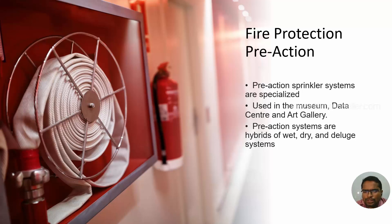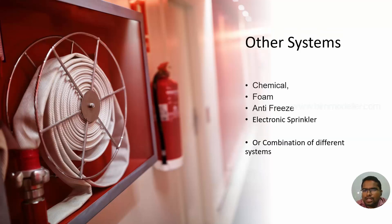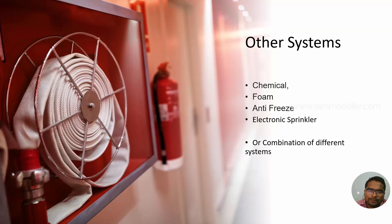These are the four basic types used. There are other systems where chemicals, foams, and antifreeze liquids are used. There are also electronic sprinklers instead of the burst-type, as well as combinations of these and other innovative systems available beyond these four. The choice depends on the requirement, the room being used, or the building being served.